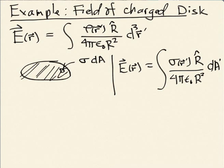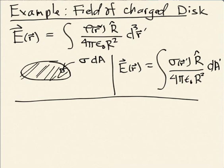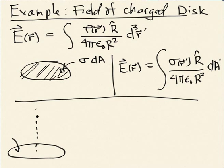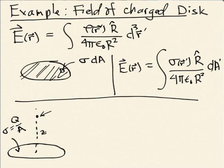For a line, you'd have charge per unit length times dl. But let's take the plate case. To calculate the field anywhere in space for the plate is not trivial. We're going to compute it just for points on the axis of the plate — the line normal to the plate that cuts through the center. We'll consider the plate to be uniformly charged with surface charge density sigma, which is the total charge Q divided by the area. I want the electric field at a distance Z from the center along the axis.